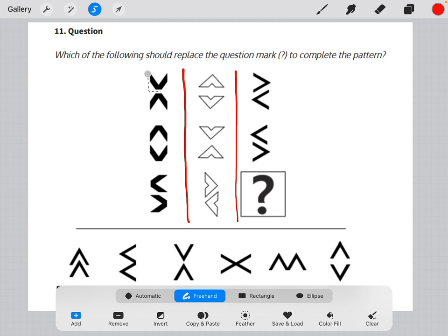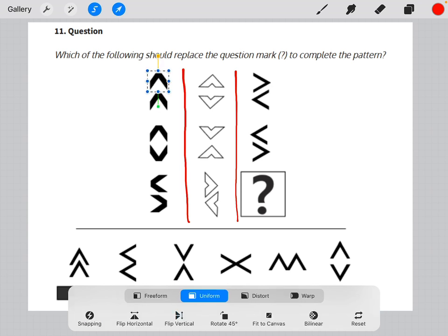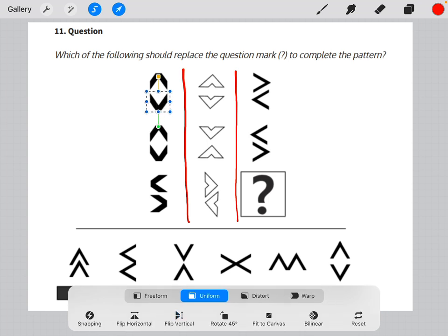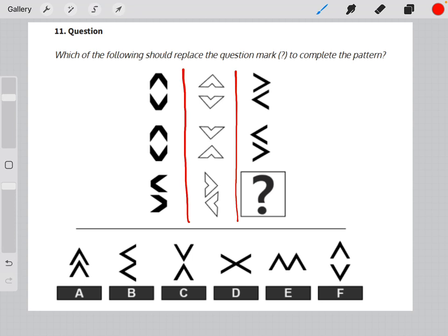If we start in our first column, the difference between row one and row two is a 180 degree rotation of both shapes in row one. So 180 degree rotation.